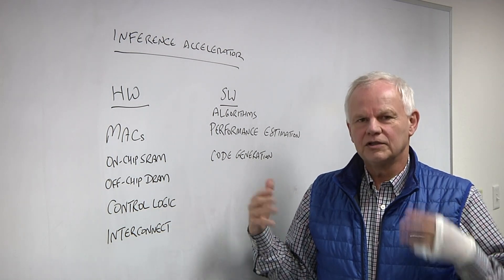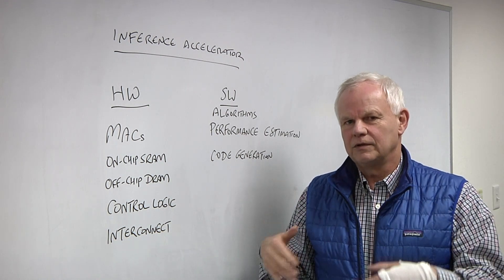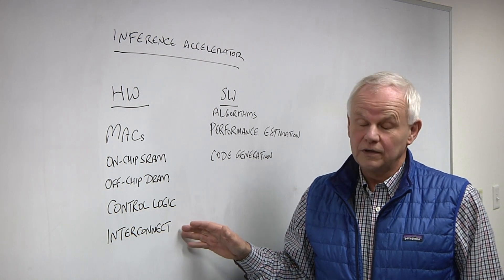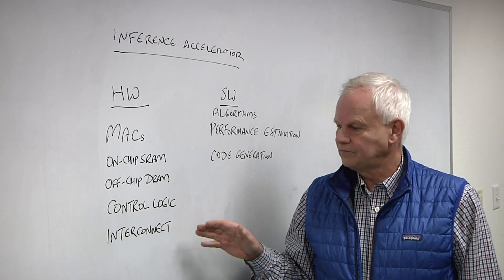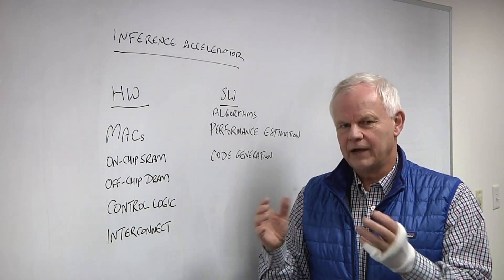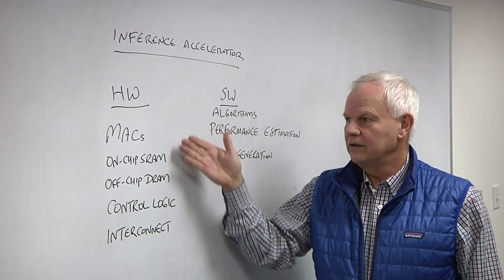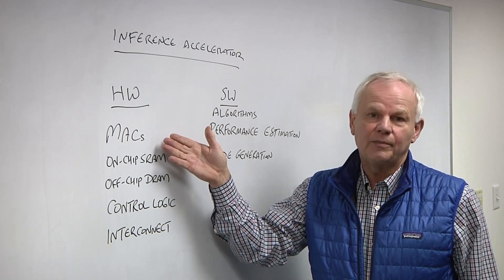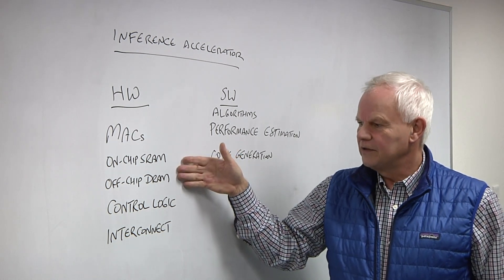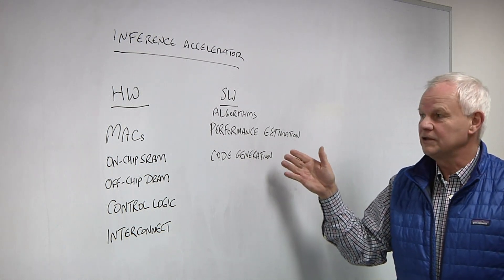You have to have control logic. Something has to orchestrate the flow of data through the chip and decide what to do, how long to do it, when to stop. And then, very importantly and rarely talked about, is the interconnect. The interconnect is the plumbing of the chip that moves data between memory and compute and back again in an efficient way to keep the MACs fed. So this is the hardware. What people mostly focus on is TOPS.